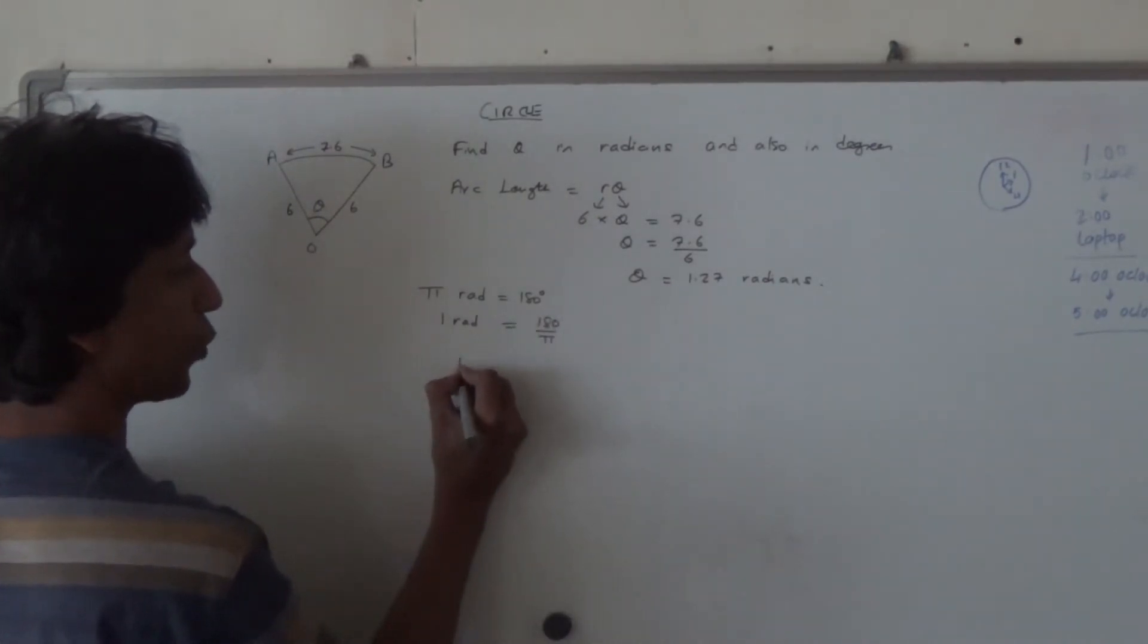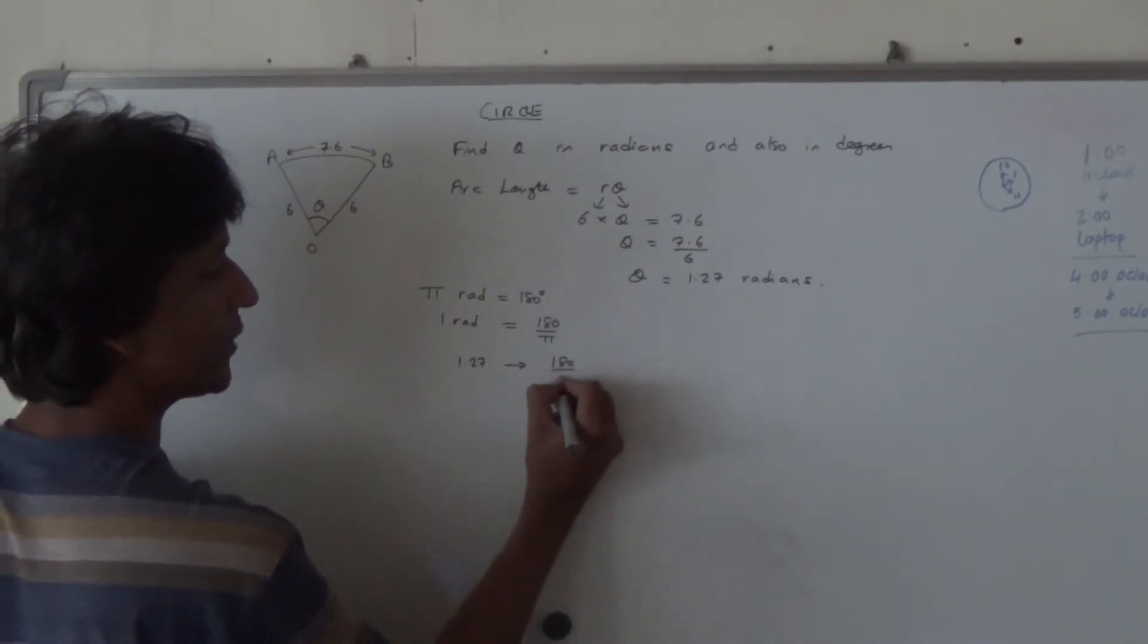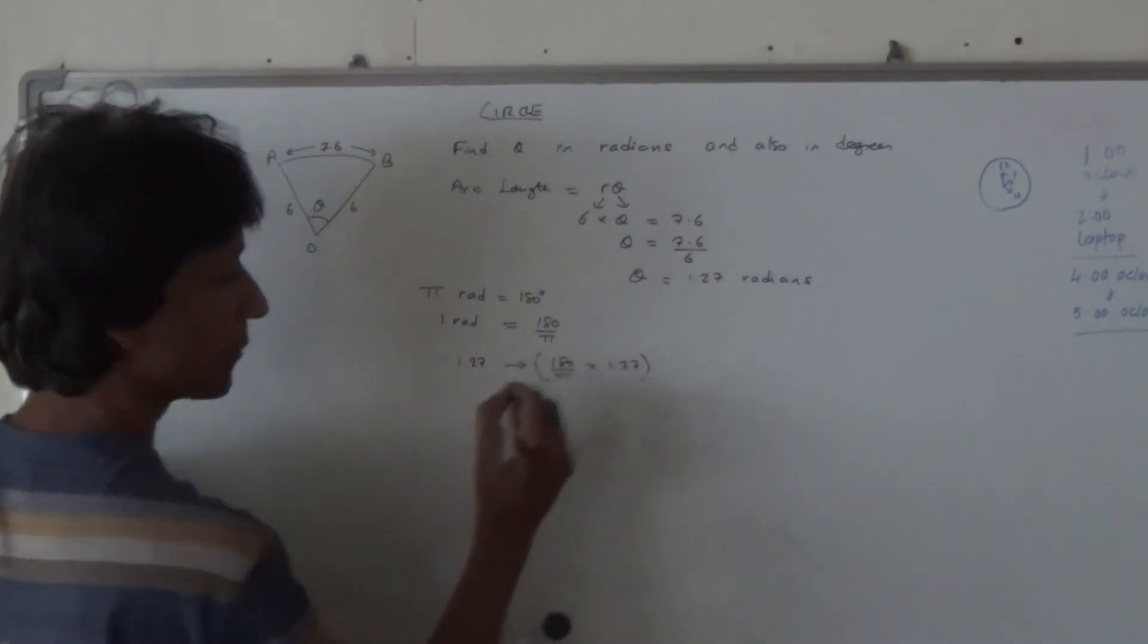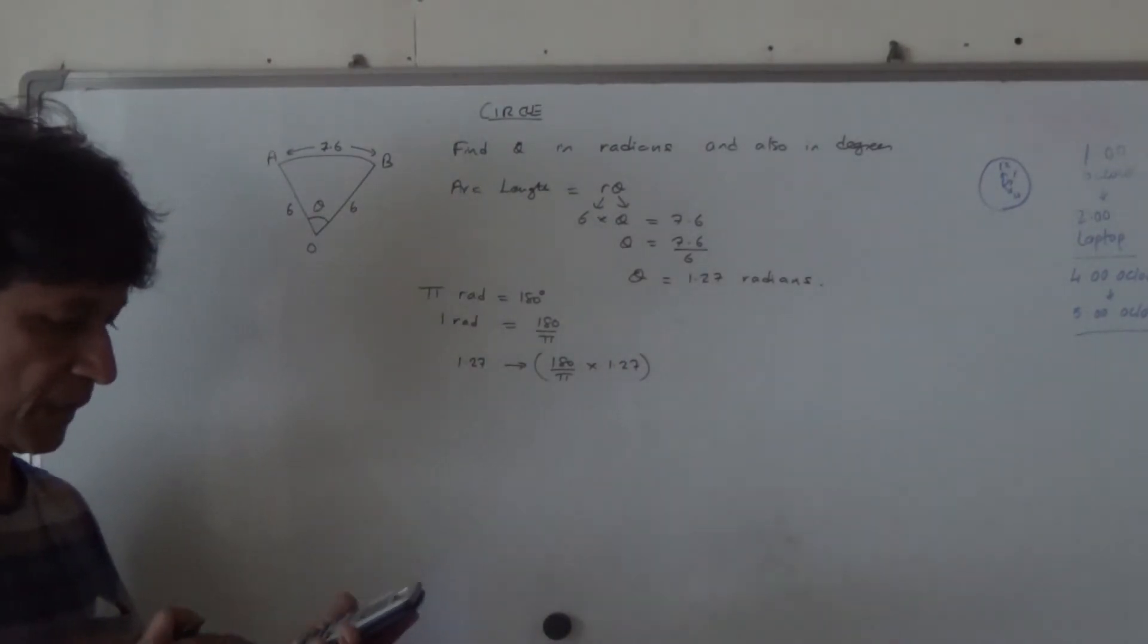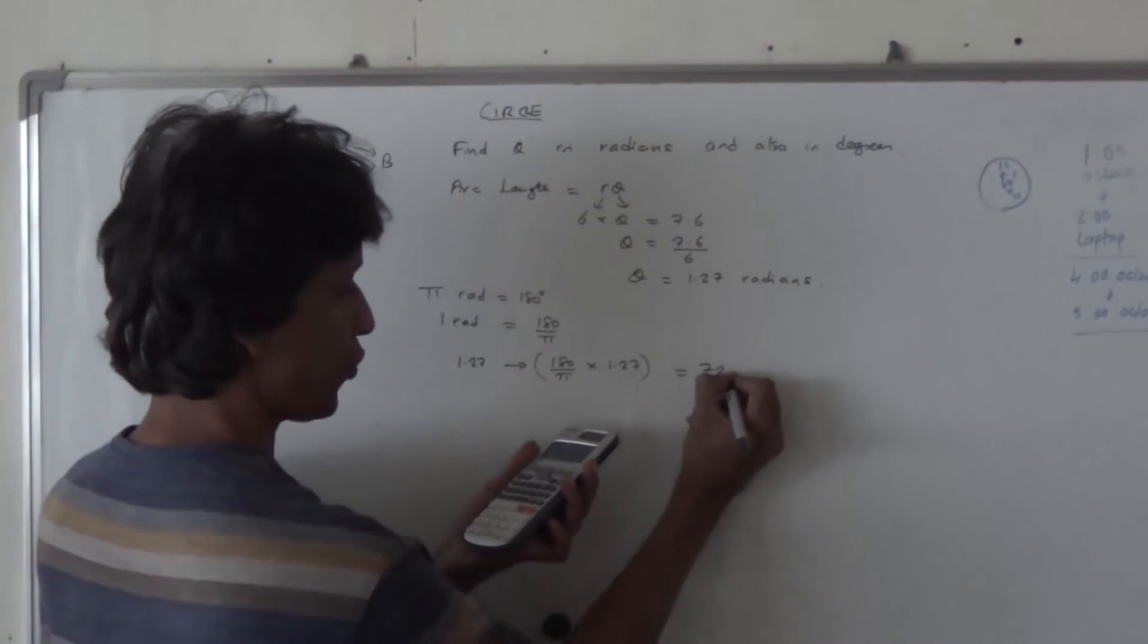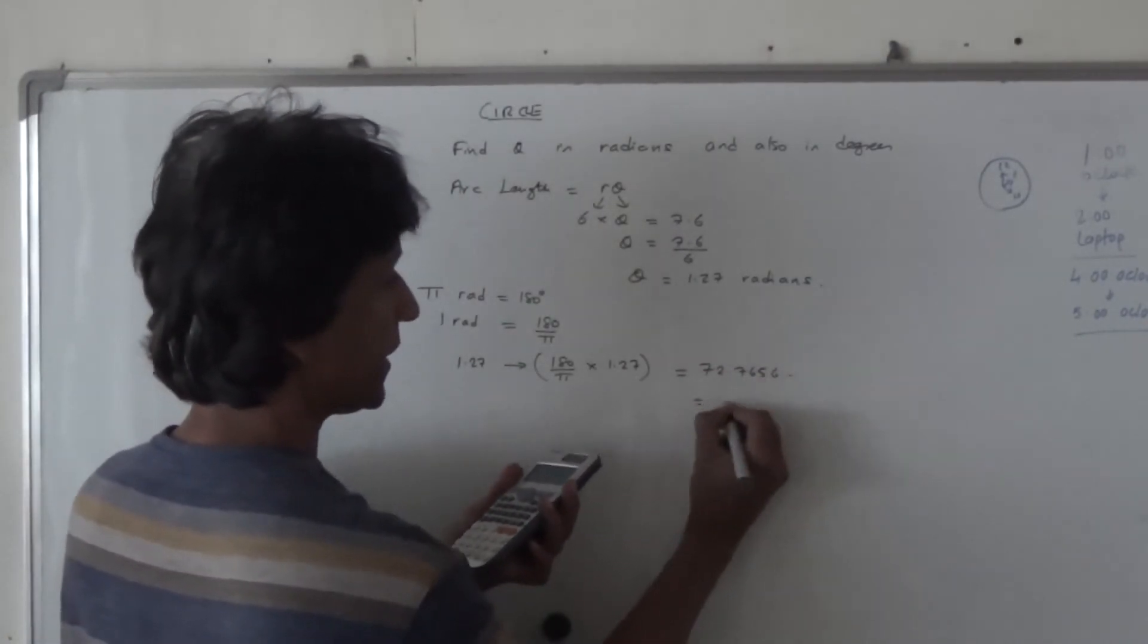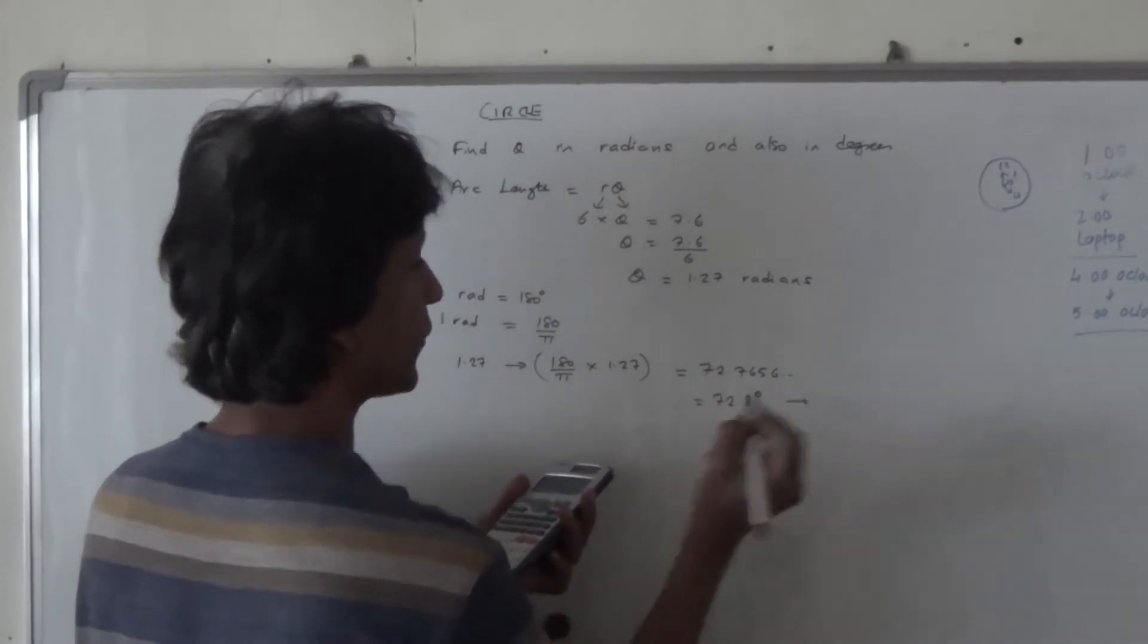And hence we've got 1.27, which is then 180 divided by pi times 1.27. So 180 divided by pi times 1.27, and we should be able to get 72.7656 and so on. So let's say 72.8 degrees to 3 significant figures.